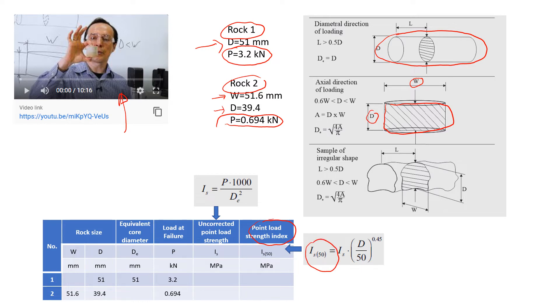The first thing we need to do is write down the size of the rocks. For the first rock, because it was a long core sample, we just need to know the diameter of the sample. We apply load in this perpendicular direction. In this case, the De, which stands for equivalent diameter, equals the diameter. So if D is 51, then De will be 51. It's very easy—probably the simplest case.